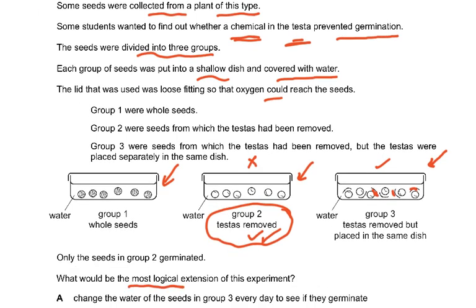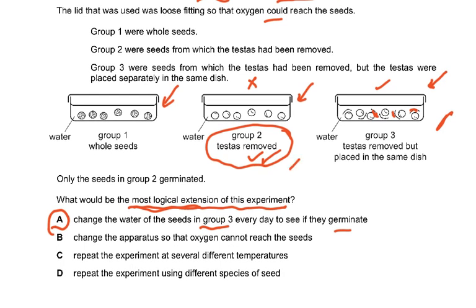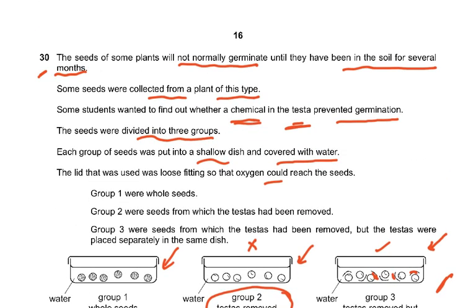What would be the most useful biological extension of this experiment? The testa is the culprit. We should change the water of the seeds in Group 3 every day to see if they germinate — because if there is a chemical and we change the water, that chemical will be washed away and the seeds may germinate. That's why the answer is A. Changing the apparatus so oxygen cannot reach seeds is wrong because Group 2 did germinate. Repeating at different temperatures or with different species is not relevant here; we are investigating the chemical in the testa.